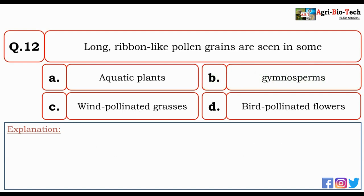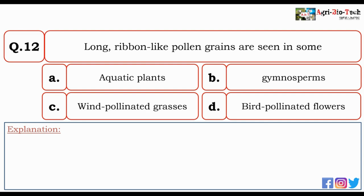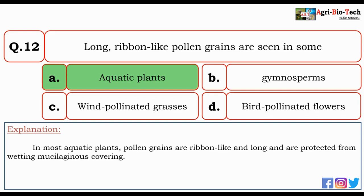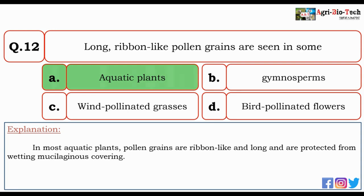Next question: long ribbon-like pollen grains are seen in — aquatic plants, gymnosperms, wind-pollinated grasses, or bird-pollinated flowers? The correct option is A — aquatic plants. In most aquatic plants, pollen grains are ribbon-like and long, and are protected from wetting by a mucilaginous covering.